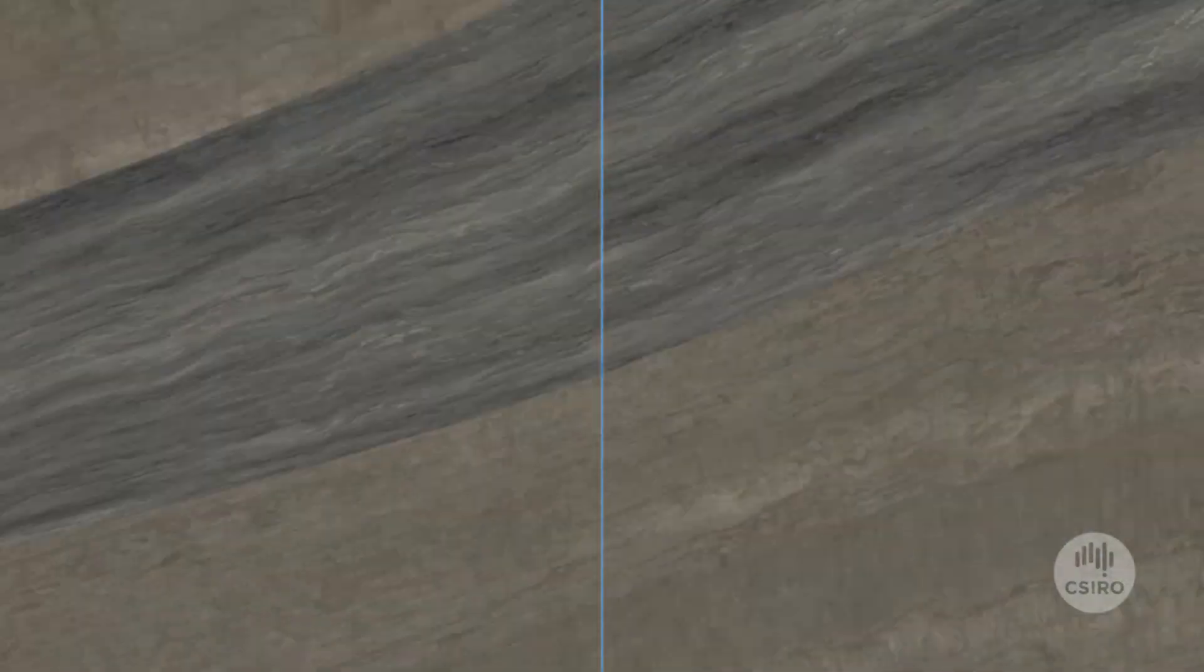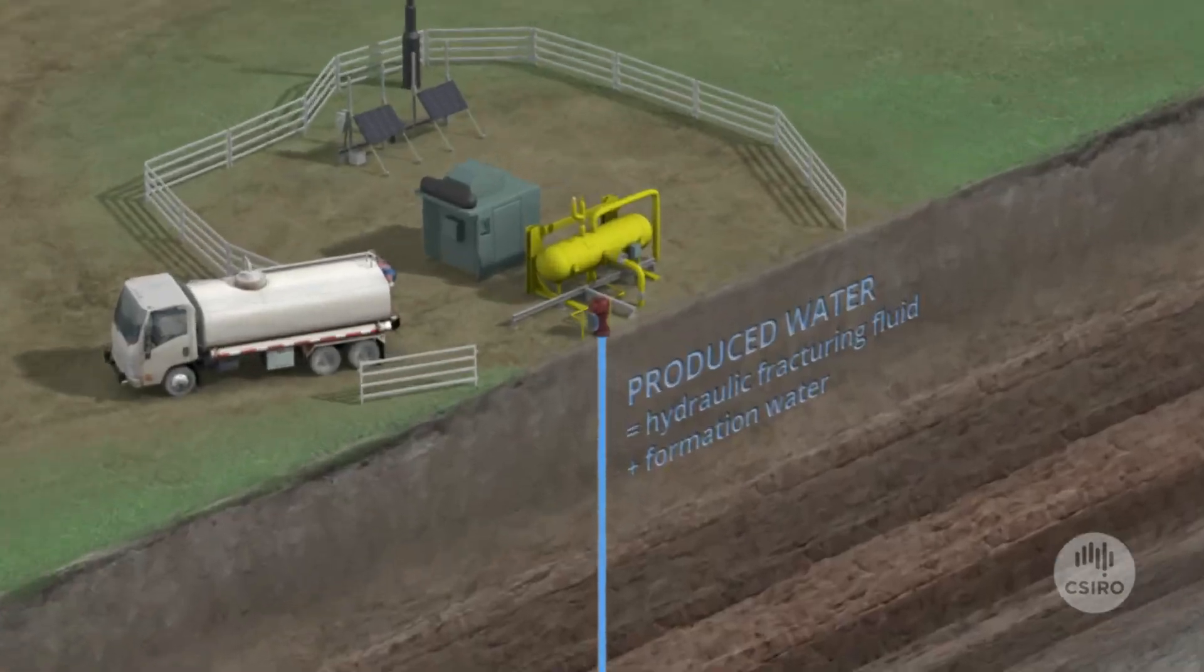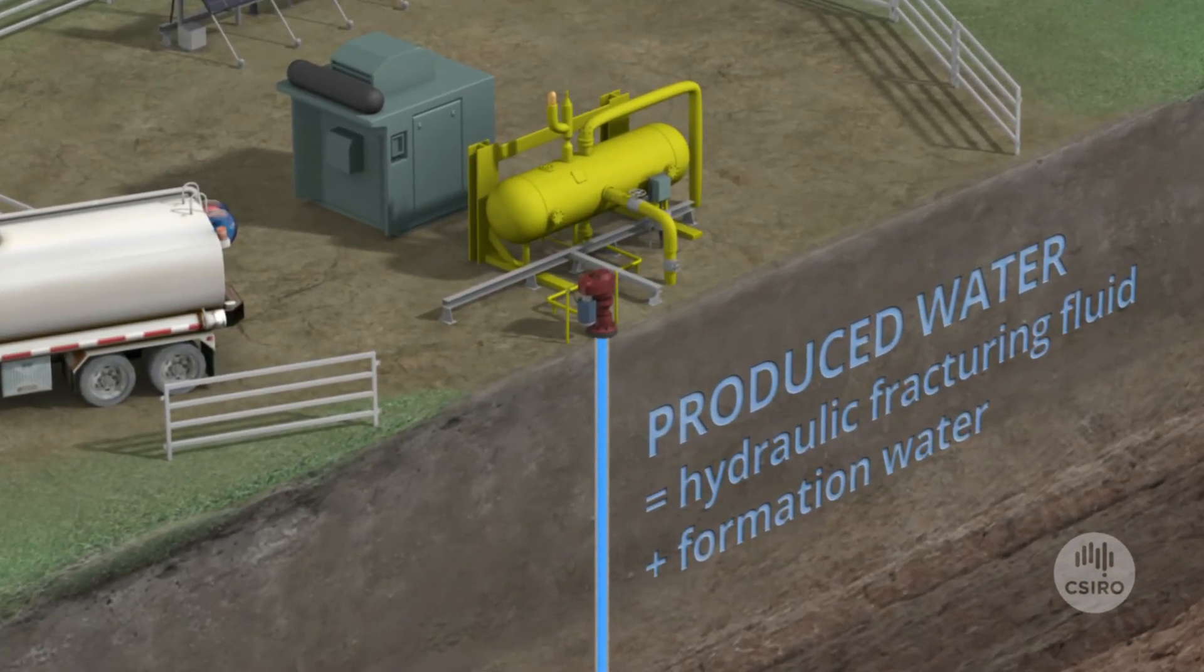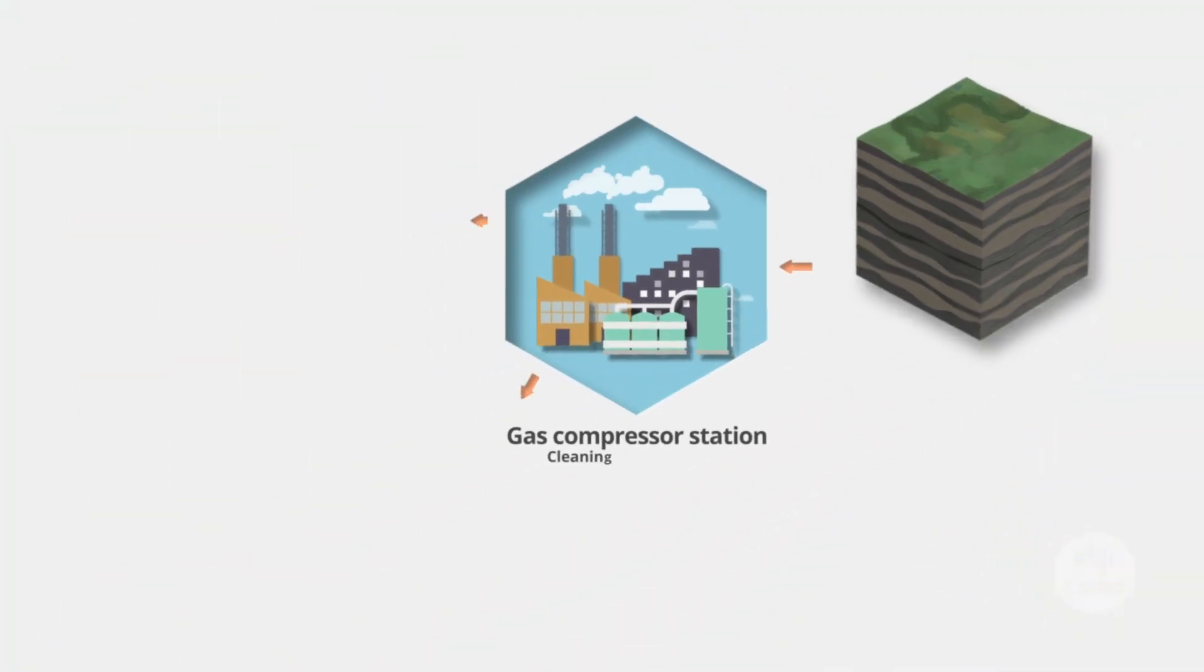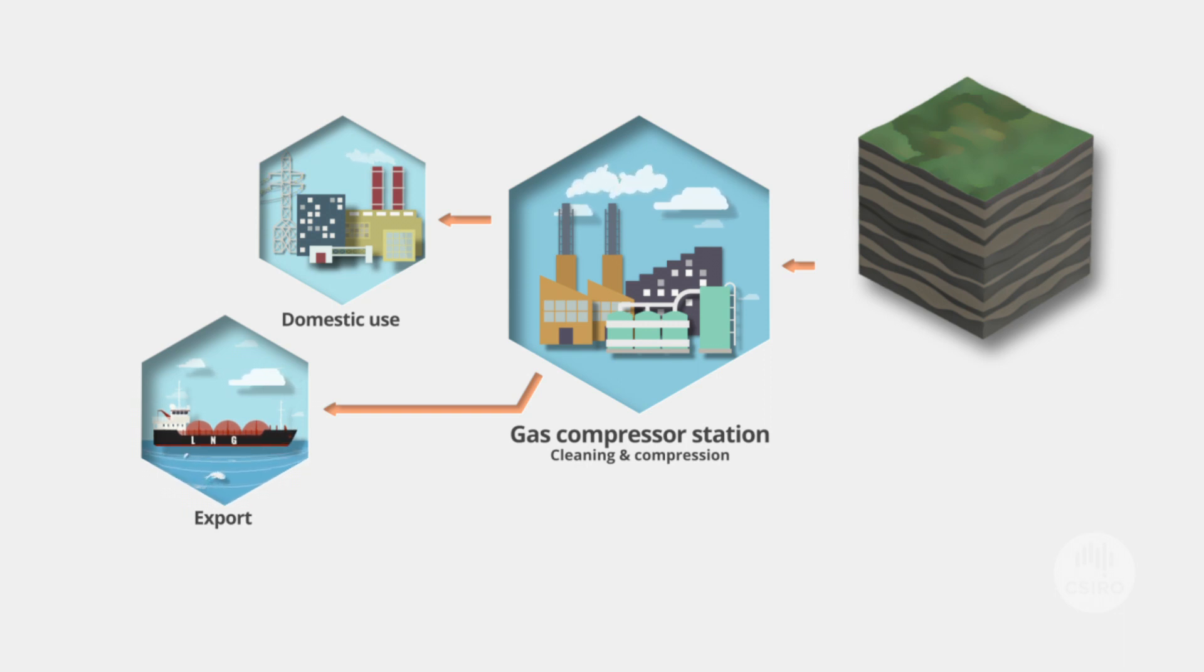Produced water and gas are pumped to the surface and separated at the well head. The extracted gas is processed and transported for domestic and international use.